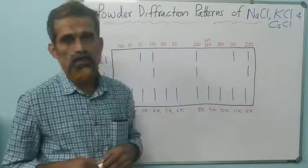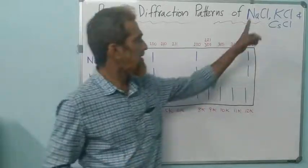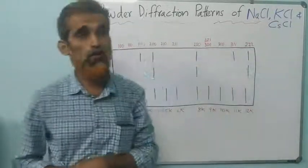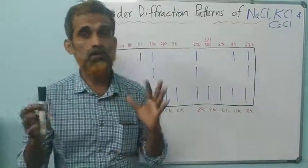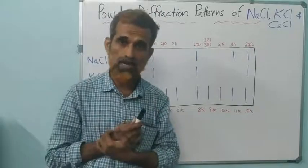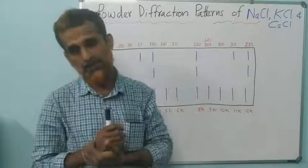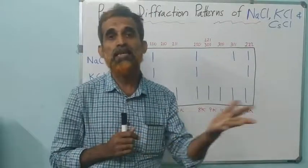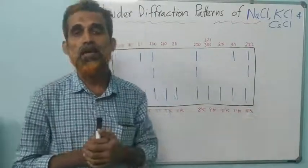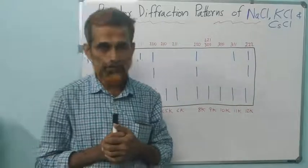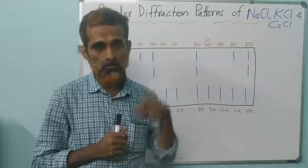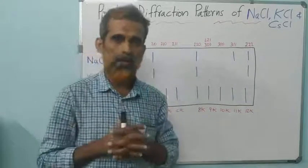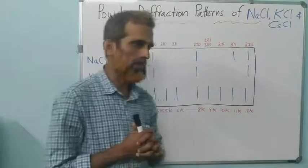Remember that sodium chloride and potassium chloride are isostructural — they have the same crystal lattice, and actually it is FCC type, which we have already discussed while discussing Bragg's experiment.